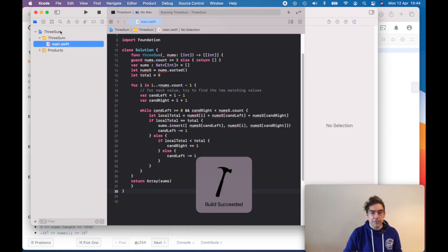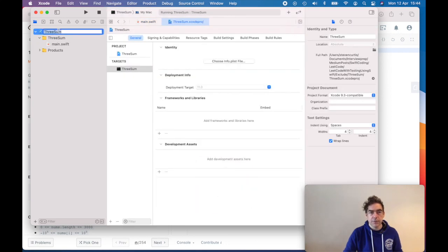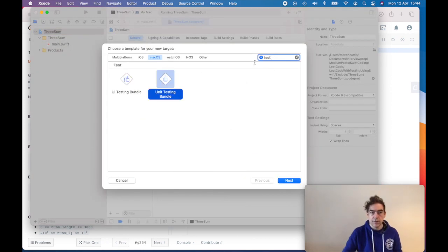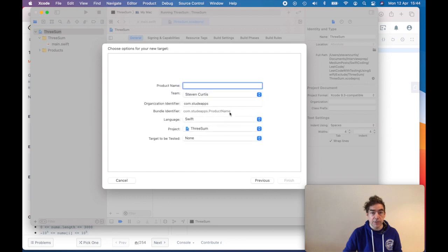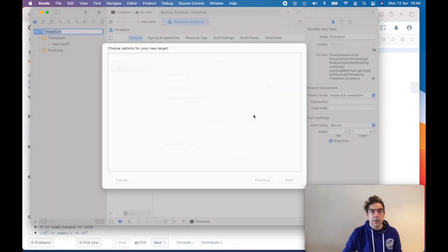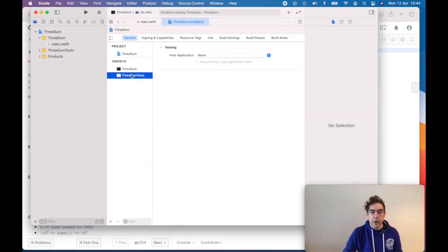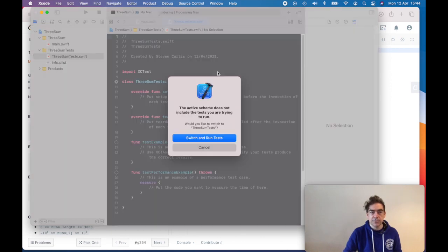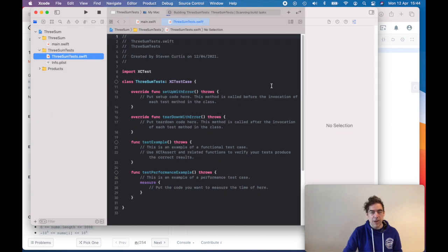We can do that by adding a test target. It's going to be a unit testing bundle. And here we are. So we have a file that will be 3SUM tests. We have to switch the target to be able to run it, which is no problem.